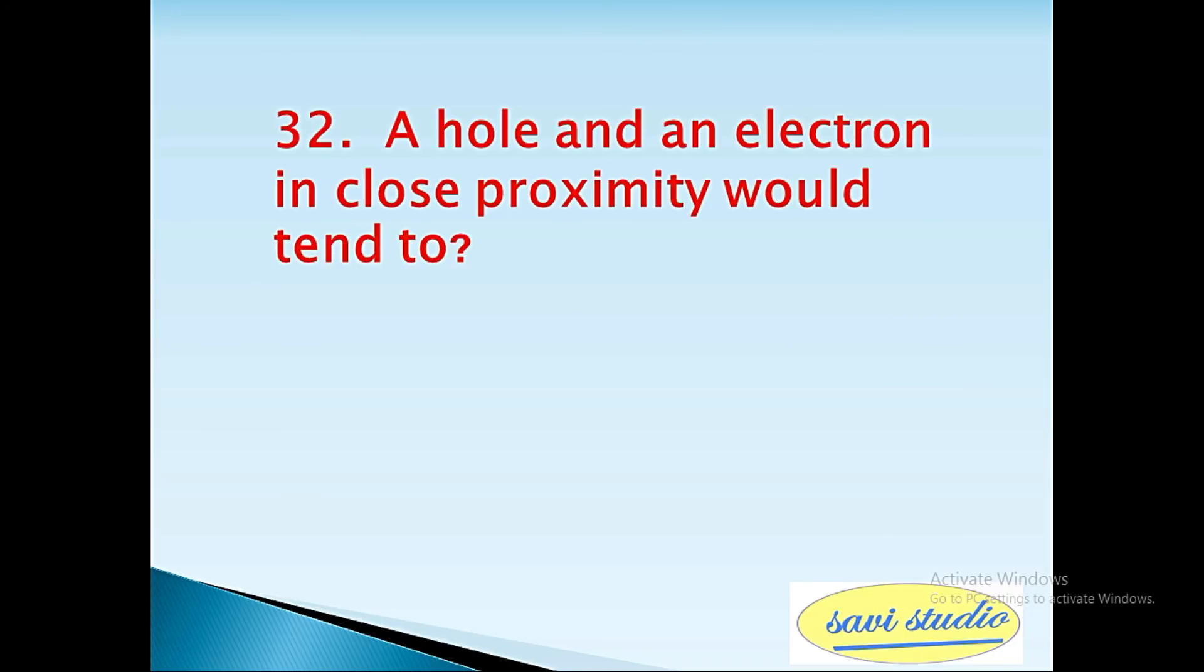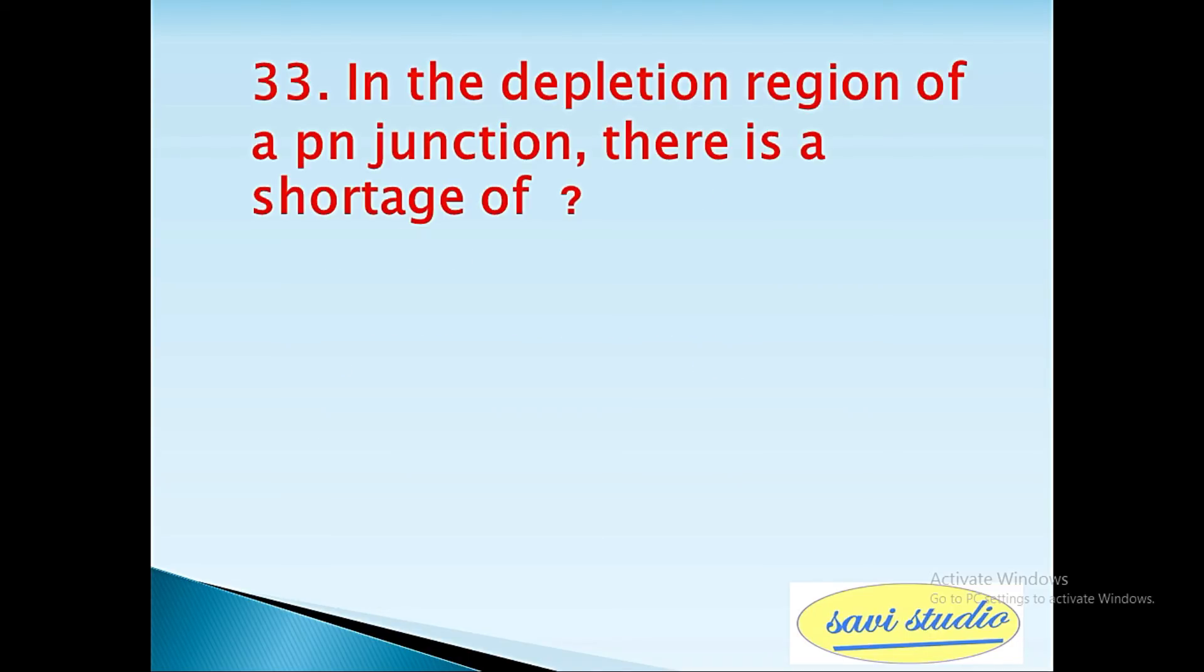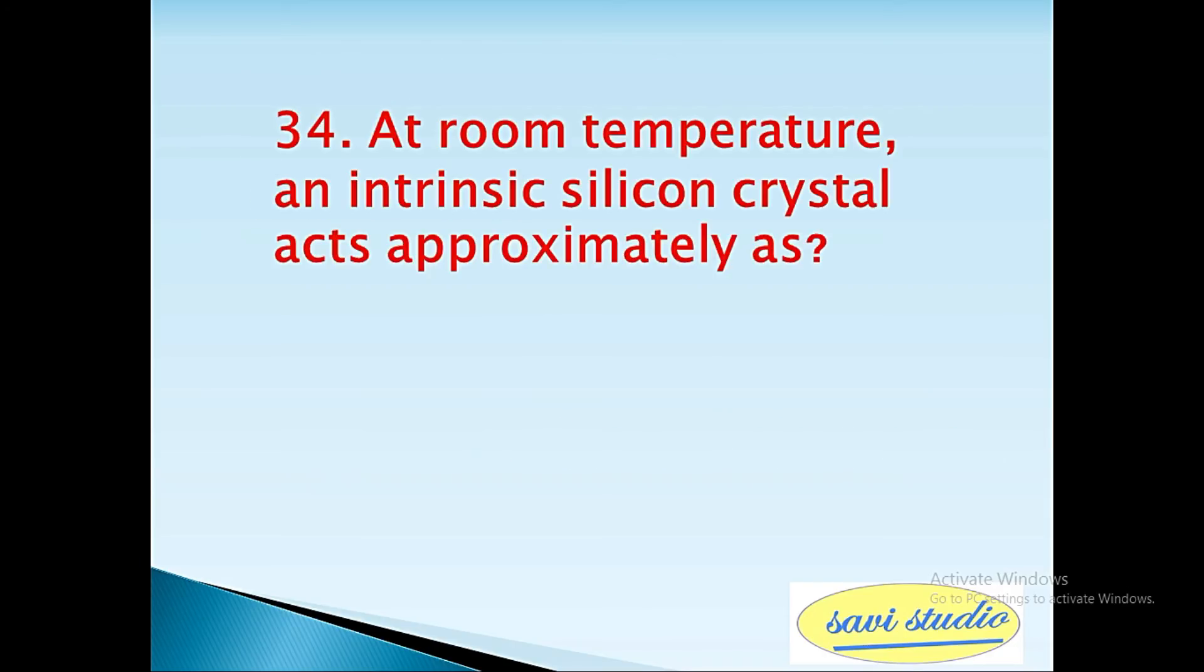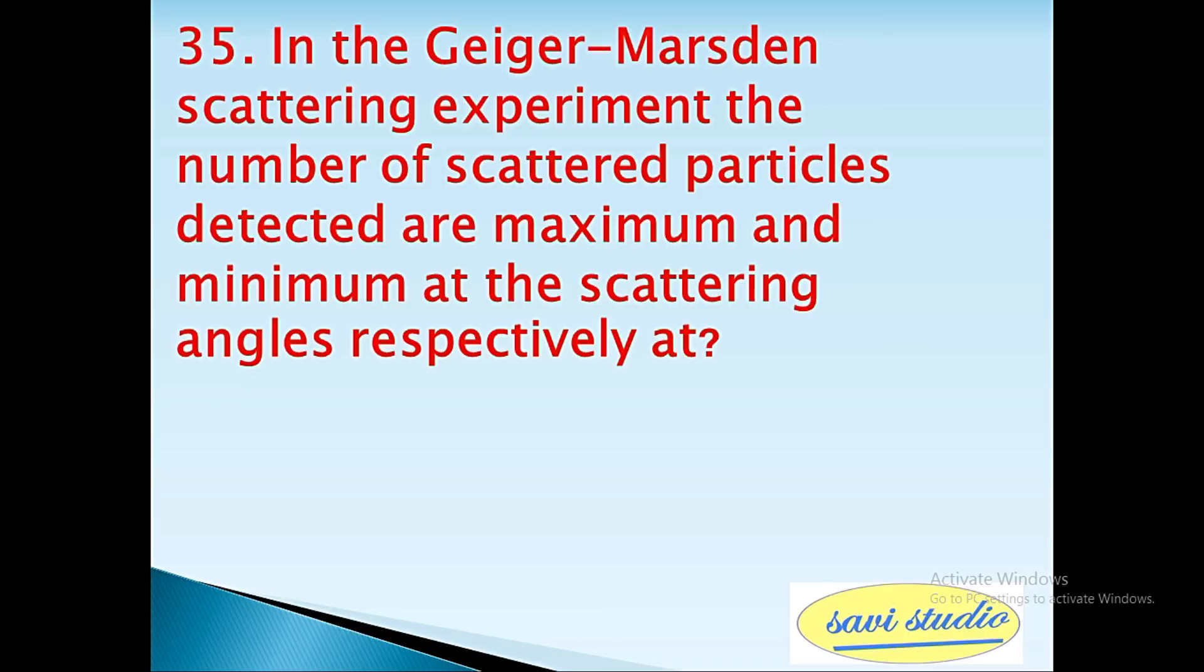32nd question: A hole and an electron in close proximity would tend to? Answer: attract each other. 33rd question: In the depletion region of a p-n junction there is a shortage of? Answer: holes and electrons. 34th question: At room temperature an intrinsic silicon crystal acts approximately as? Answer: an insulator.